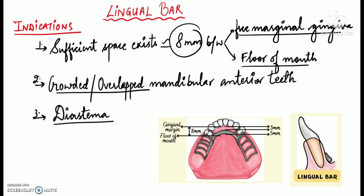The third indication is diastema of the mandibular anterior teeth. Lingual bar will not compromise aesthetics in such cases because there is no metal show — even if the patient has a diastema of the lower anterior teeth, the metal of the lingual bar will not be visible through the gap.